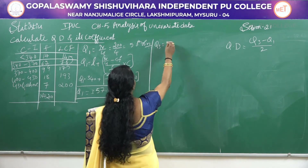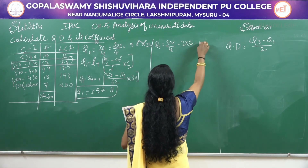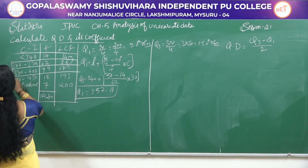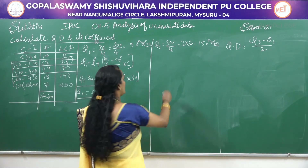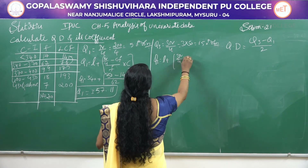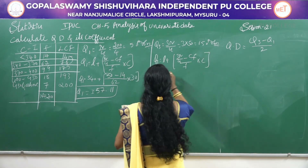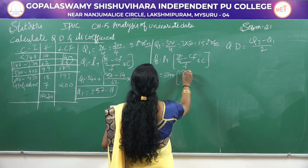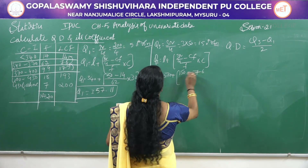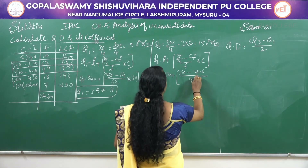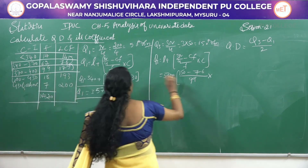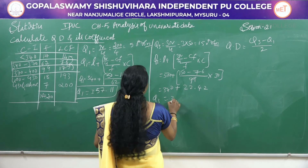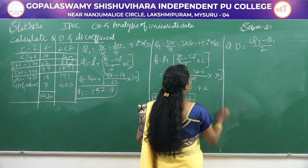Next find out Q3. Q3 = 3N/4 = 3 × 50 = 150th observation. 150 comes in LCF 175. Formula: Q3 = L + (3N/4 − CF) / F × C. L = 370, 3N/4 = 150, CF = 76, F = 99, C = 30. This is 370 + 22.42. Q3 value is 392.42.